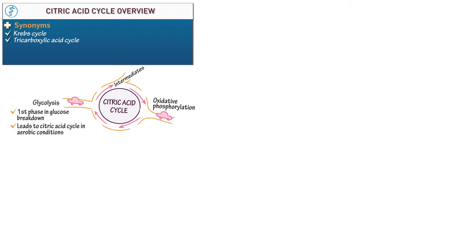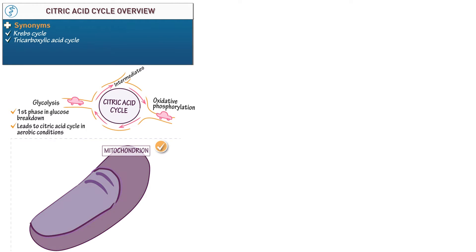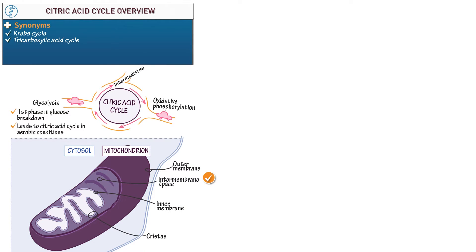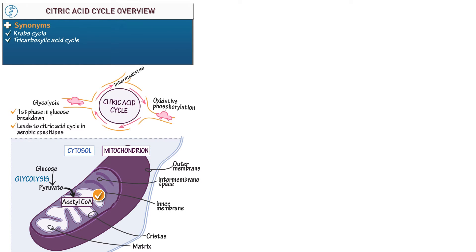Next, let's address the location of the citric acid cycle. Draw a mitochondrion as an oval shape with a window to see its contents. Label its outer membrane and indicate that it's suspended within the cytosol. Draw an inner membrane with invaginations called cristae. Label the space between the membranes as the inter-membrane space, and the space within the inner membrane as the matrix. Glycolysis occurs in the cytosol and converts glucose to pyruvate, which enters the matrix where it's converted to acetyl-CoA. Acetyl-CoA then enters the citric acid cycle, which occurs in the matrix. The major energy carriers of the cycle deliver electrons to the inner membrane where oxidative phosphorylation takes place.